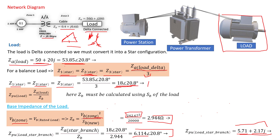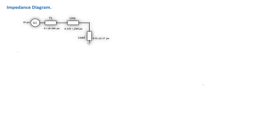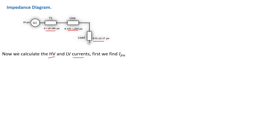We've now calculated everything: the per unit of the transformer, the cable, and the load. We can now draw our per unit diagram. The per unit diagram shows the transformer, the line, and the load. From tutorial one, we were asked to find the high-voltage and low-voltage currents. This is the transformer — this is the high-voltage side and this is the low-voltage side, since it is a step-down transformer.